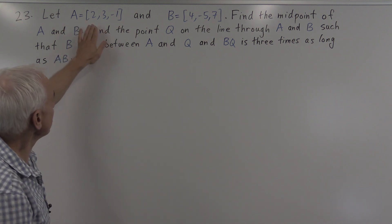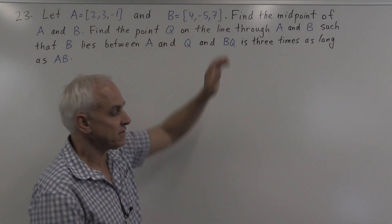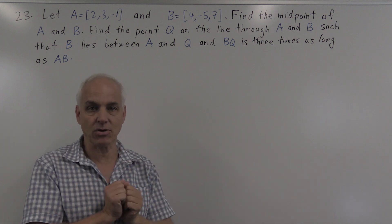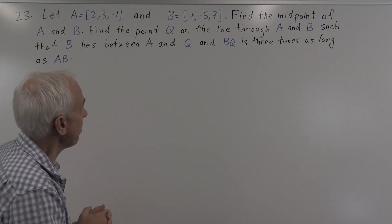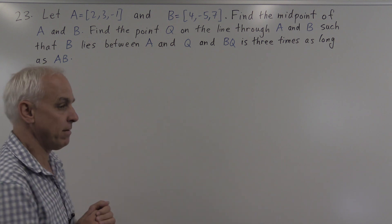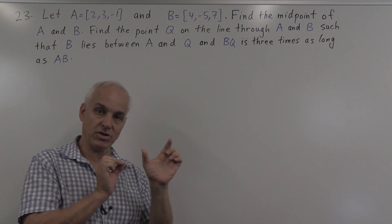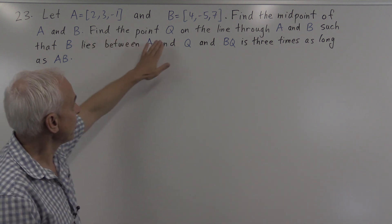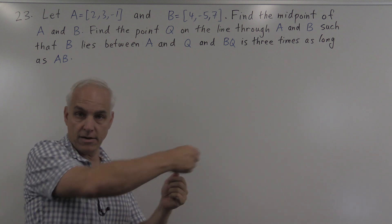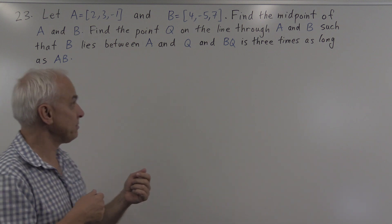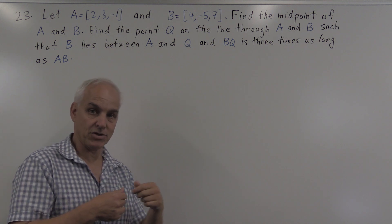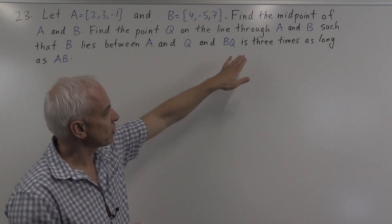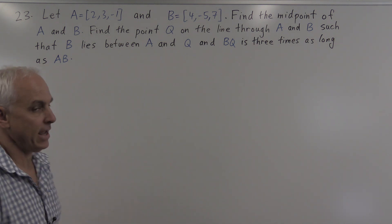So let A be the point and B be the point. These are two points in three-dimensional space. The first thing we're asked is to find the midpoint of A and B — in other words, to find the point which is exactly halfway between A and B. Then we are asked to find the point Q which is on the line through A and B such that B lies between A and Q, and such that BQ is three times as long as AB.